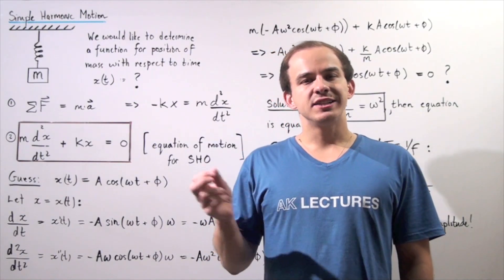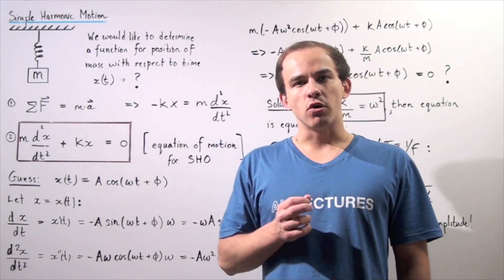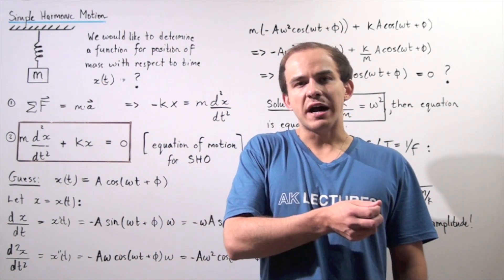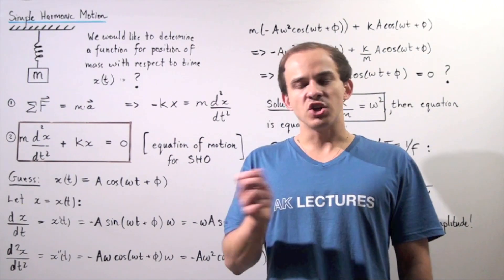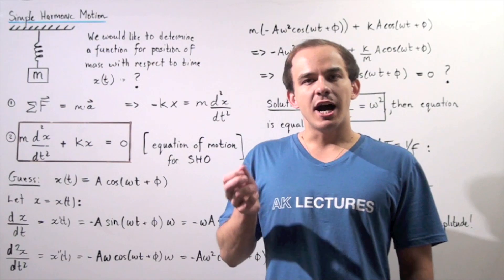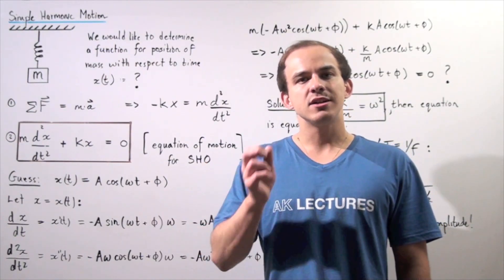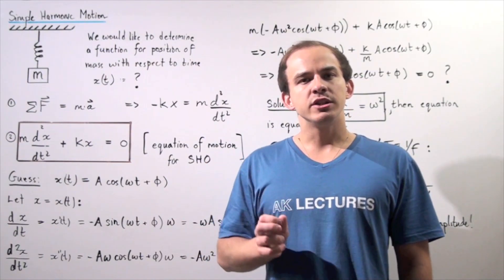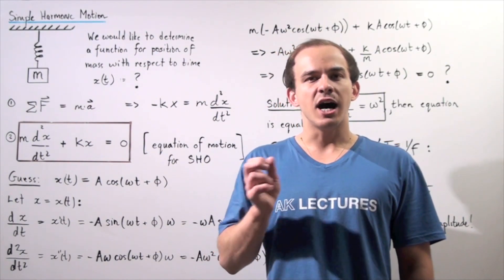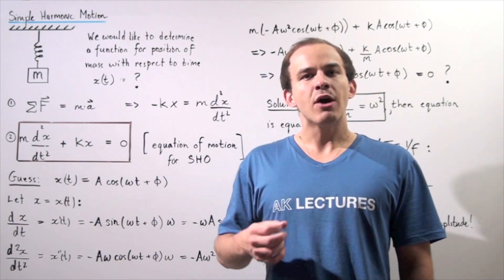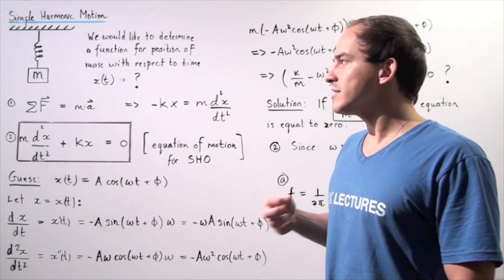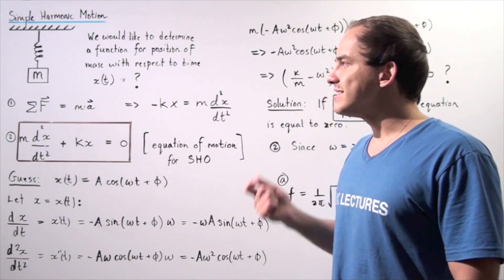Let's suppose we have an object that is oscillating back and forth along some pathway. It begins in some initial position, goes to a final position, and continues going back and forth. If the restoring force acting on the object creating that oscillation is directly proportional to the displacement — in other words, the restoring force obeys Hooke's Law — then our object is said to undergo simple harmonic motion.